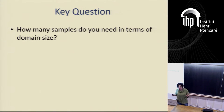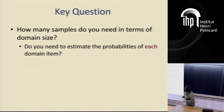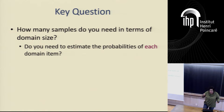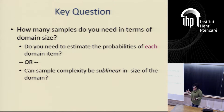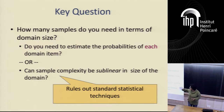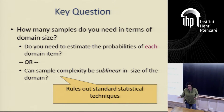For most of this talk I'm going to be talking about sample complexity, mentioning some computational issues here and there. In particular, what do we care about? We want to know: do you actually have to estimate the probability of each domain item — do you have to actually learn the distribution — to figure this out? Or can you solve some of these problems with sample complexity that's sublinear in the size of the domain? That would rule out the standard learning-based methods where you're learning the probabilities one by one.